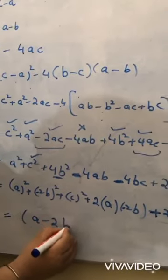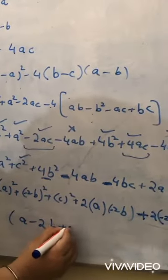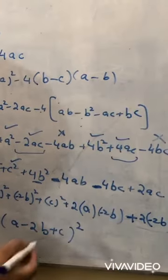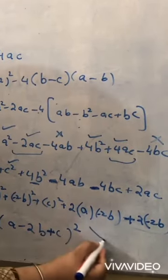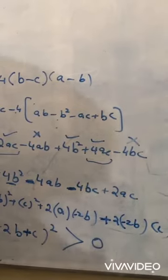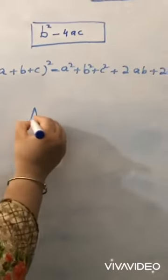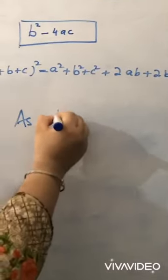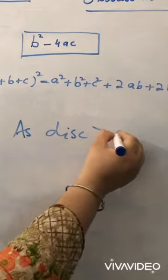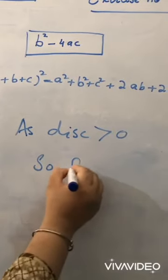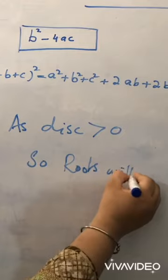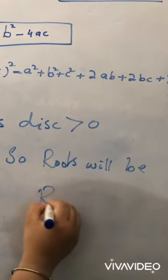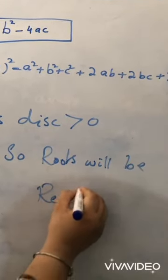So it can be written as (a minus 2b plus c)². A perfect square is always positive, so it is greater than 0. Therefore, the discriminant is greater than 0, which means the roots will be real. It is proved.